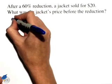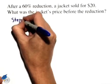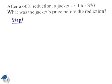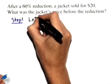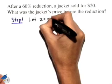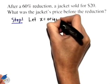In step 1, we'll let x equal the unknown quantity. The unknown quantity in this case is the original price of the jacket before the reduction. So we'll let x equal the original price of the jacket.